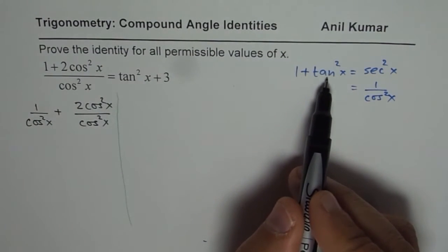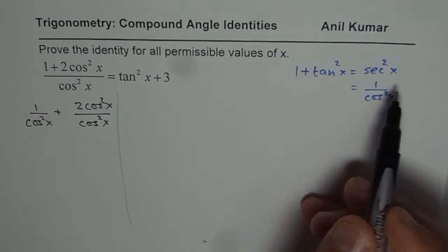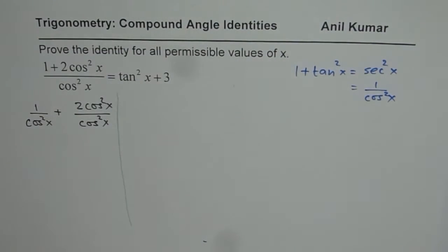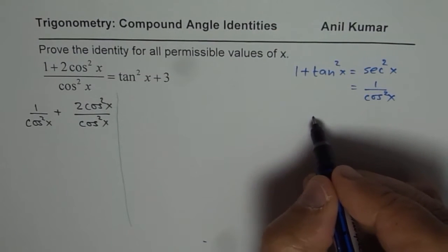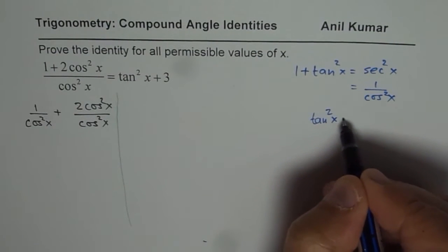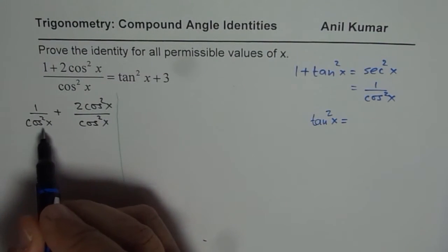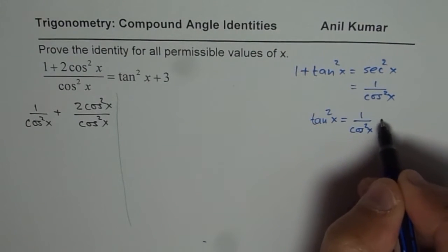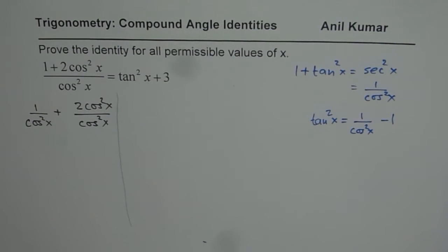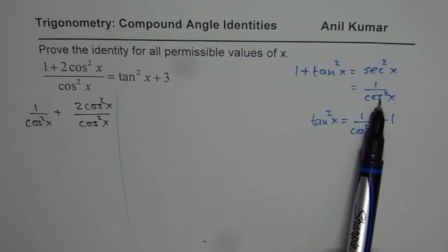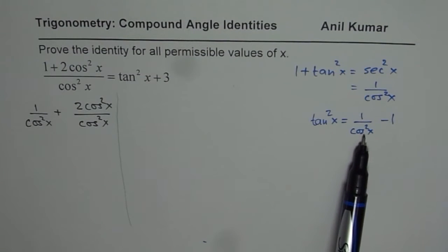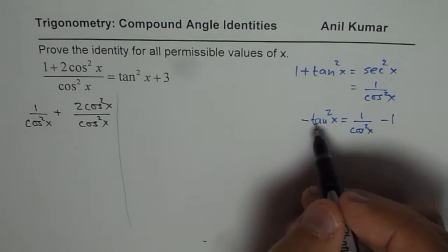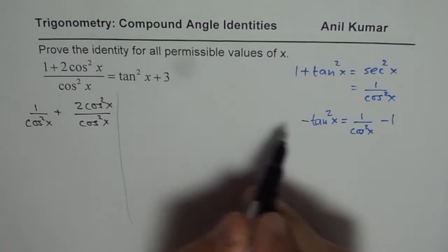Since 1 + tan²x = sec²x = 1/cos²x, we can say tan²x = 1/cos²x − 1. We are going to use this modified identity and substitute it into the right side. So tan²x can be written as 1/cos²x − 1.